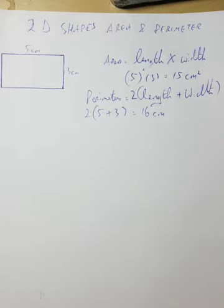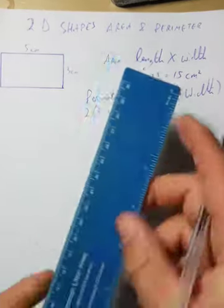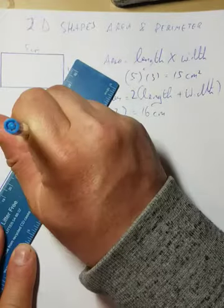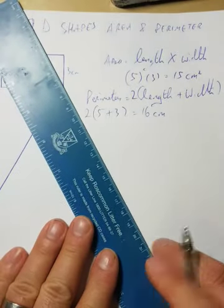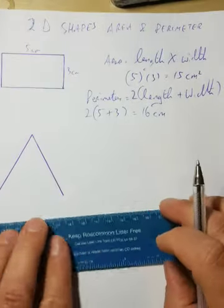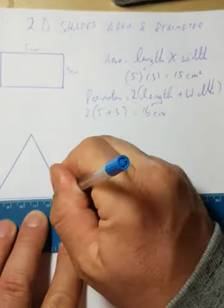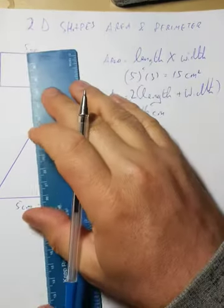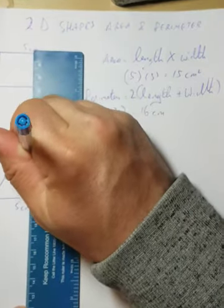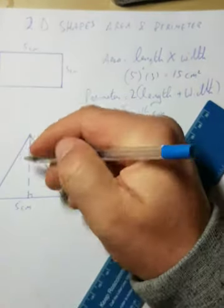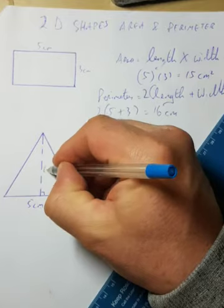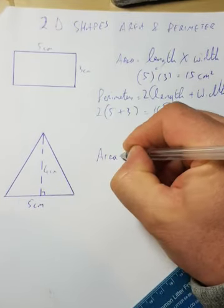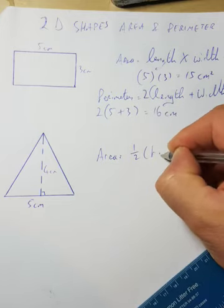Next shape that we're going to look at is our triangle. If I want to get the area of a triangle, say I have a triangle with a base width of five centimeters and a perpendicular height—this is the height perpendicular from the top point of my triangle to the base of the triangle—that's four centimeters.